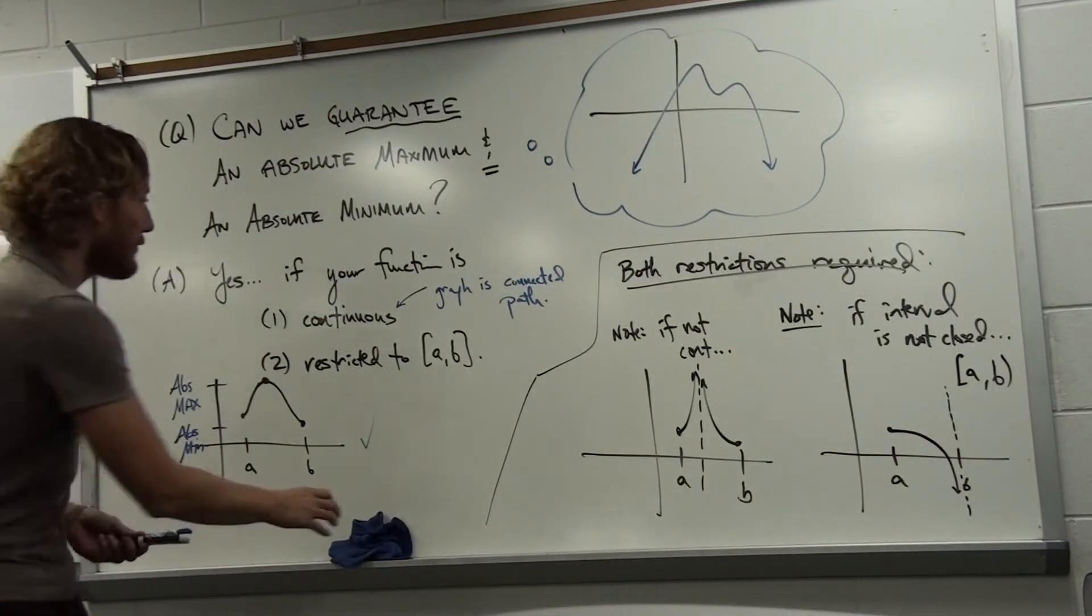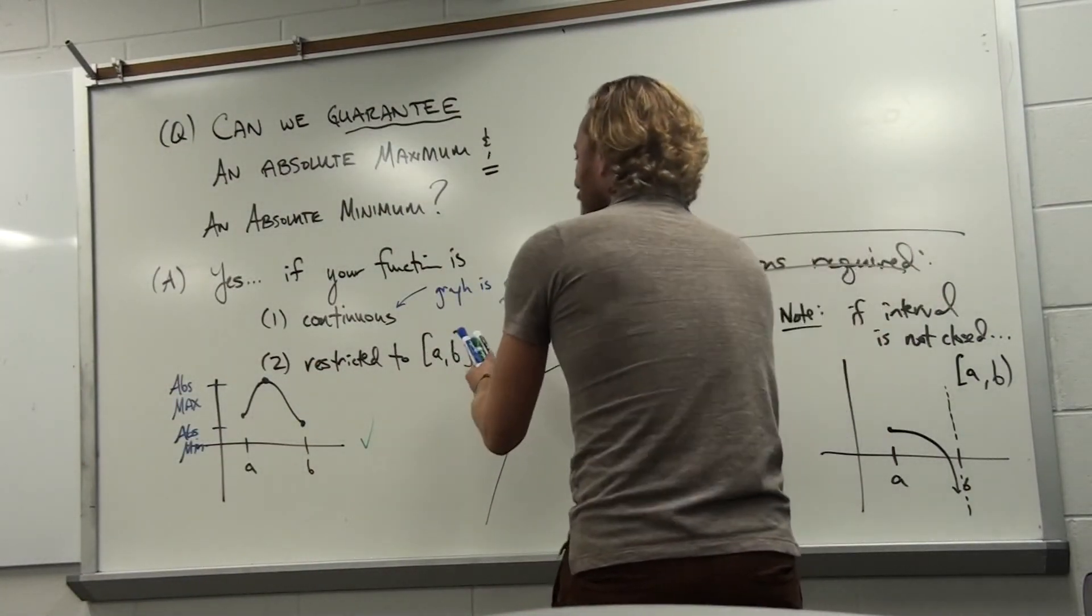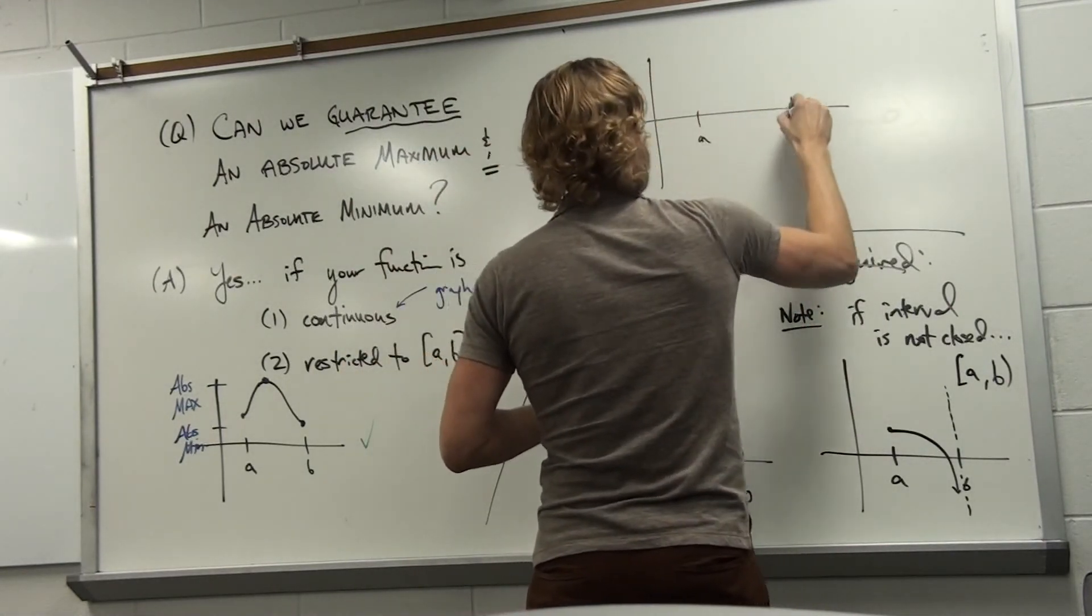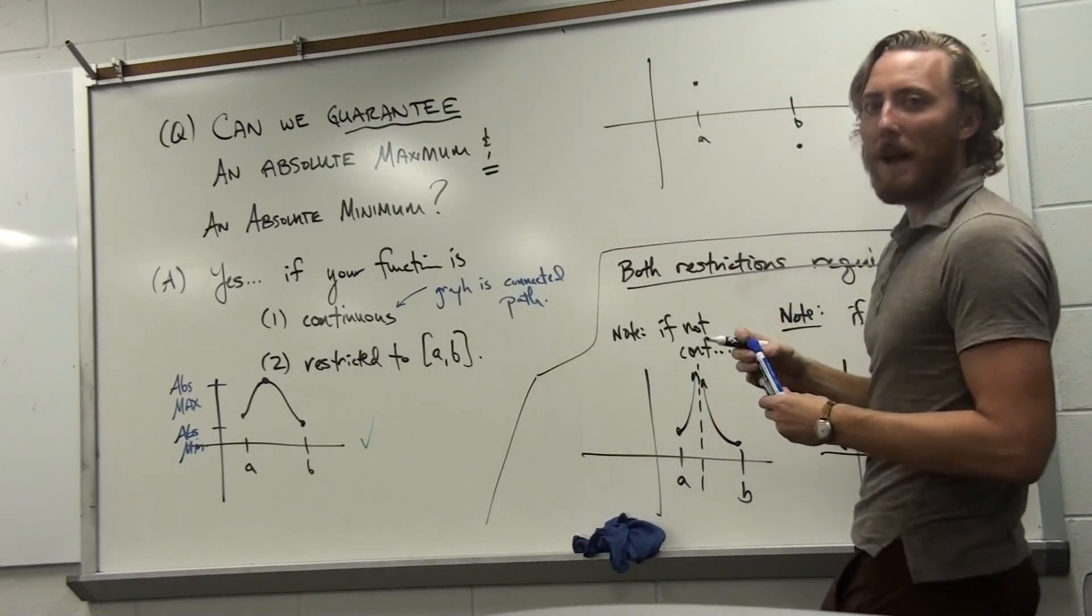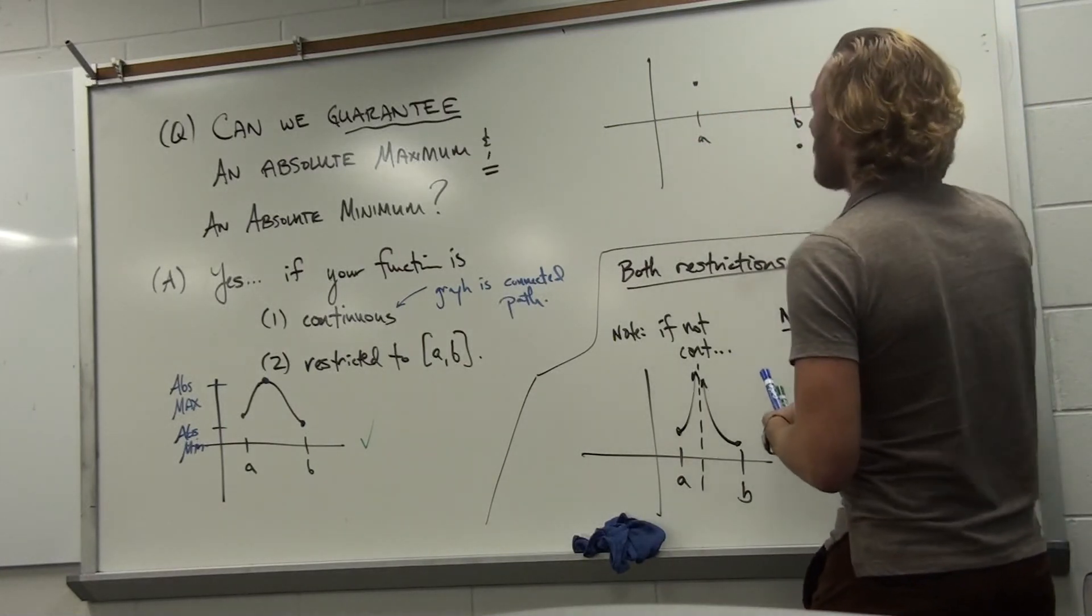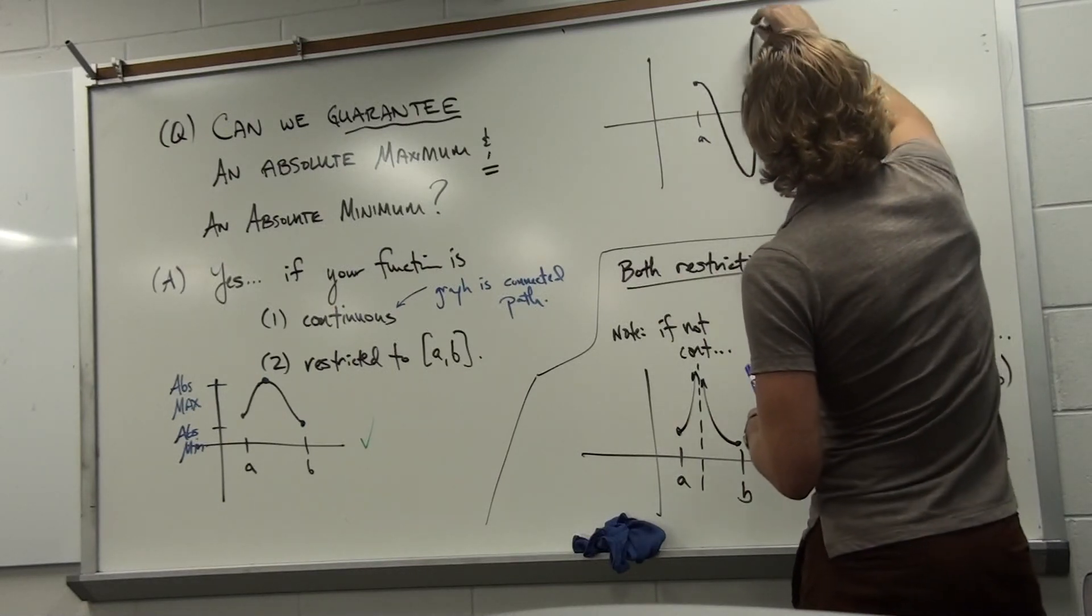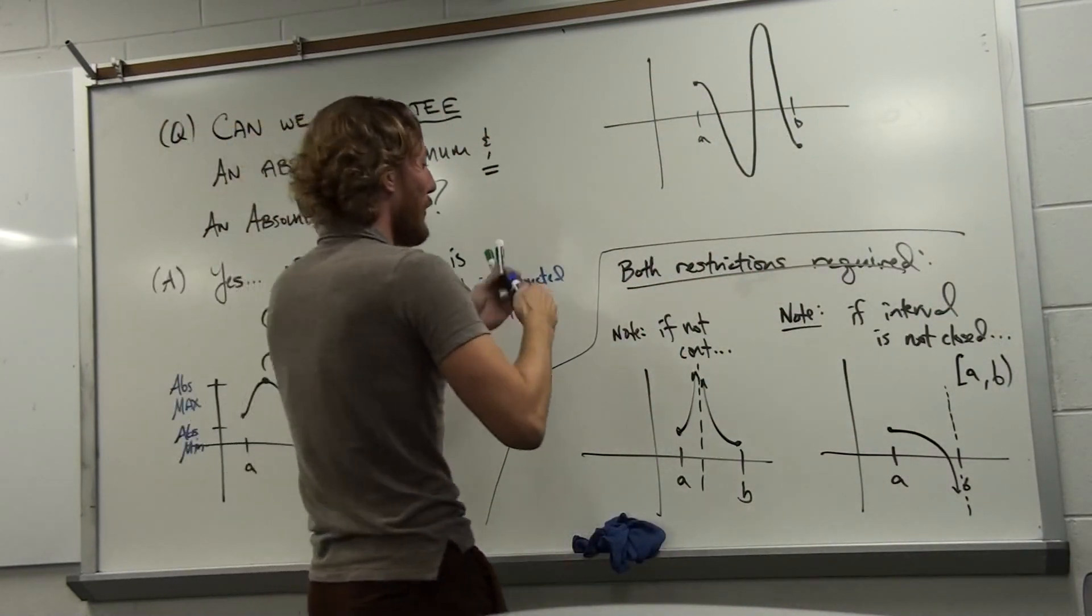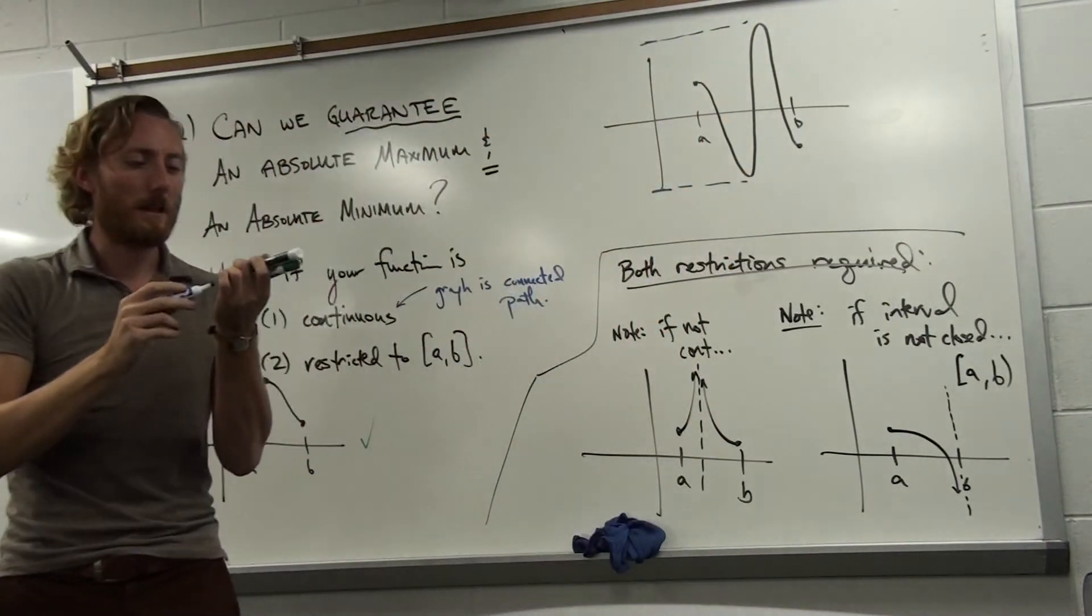The long story short: as long as you exist on a closed region from a to b and you're continuous, you have no way around reaching a maximum. If you exist at a, exist at b, and are continuous in between, you can only go so low and only go so high. You'll have an absolute maximum wherever that turns out to be, and an absolute minimum wherever that turns out to be.